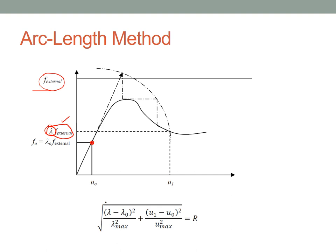We know the structure is in equilibrium at a point under displacement u_0 and external force F_0 = lambda_0 × F_external. To find another point on the force-displacement curve, the displacement is unknown and lambda is an extra unknown, so we need an extra equation: the arc length equation. This is the equation of an arc centered at the previous equilibrium point with a radius r, which is specified by the user or the software.